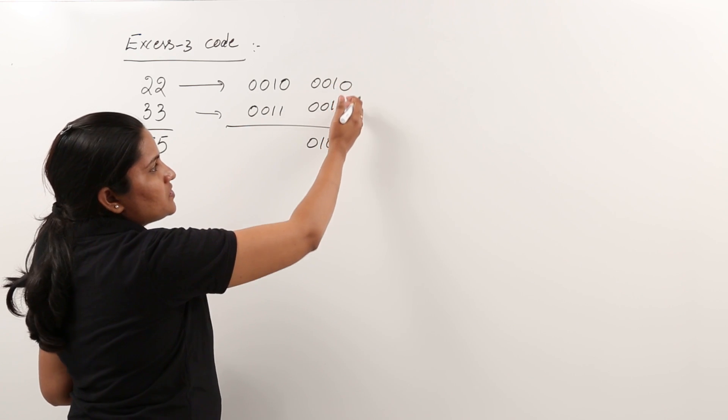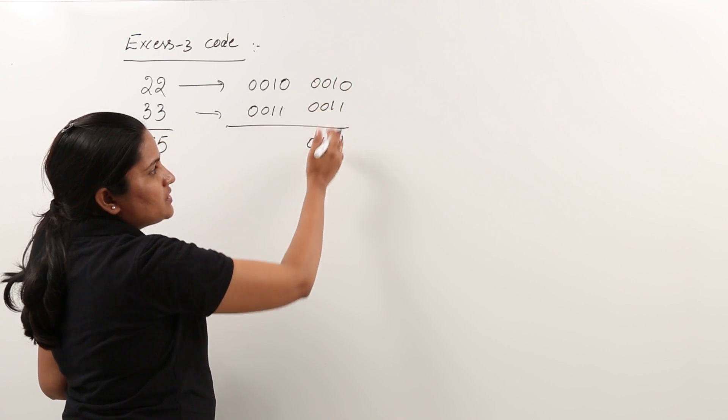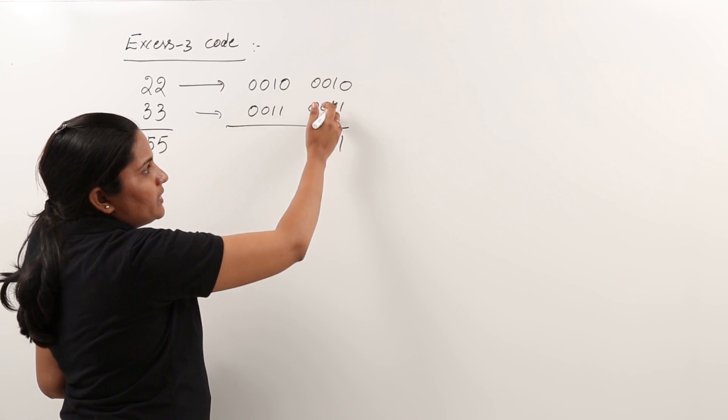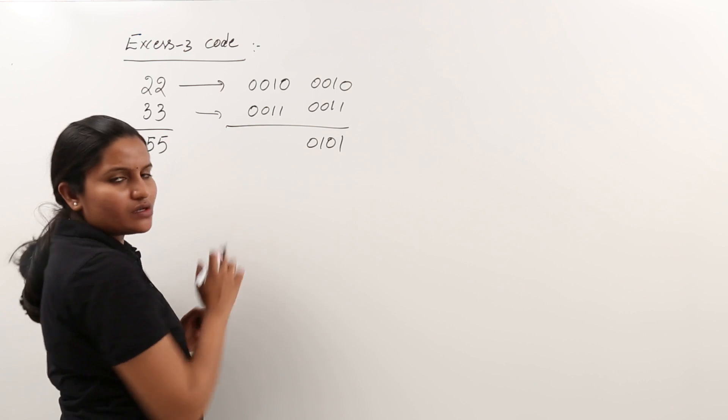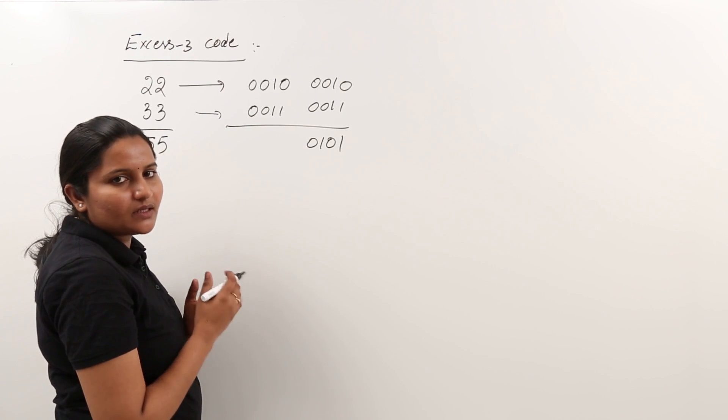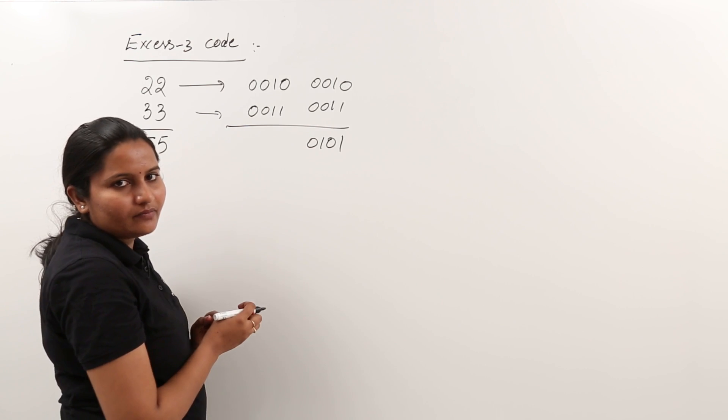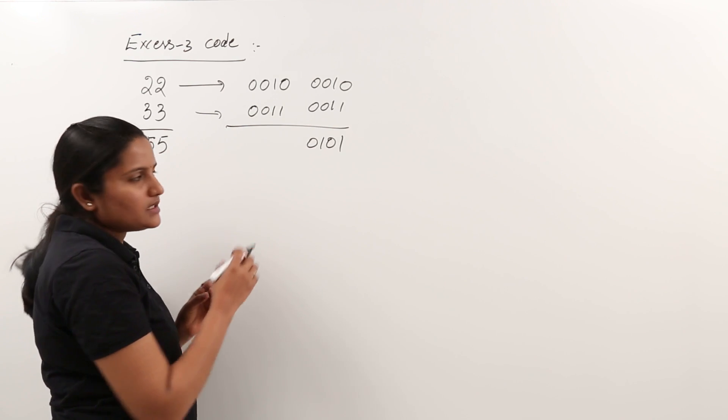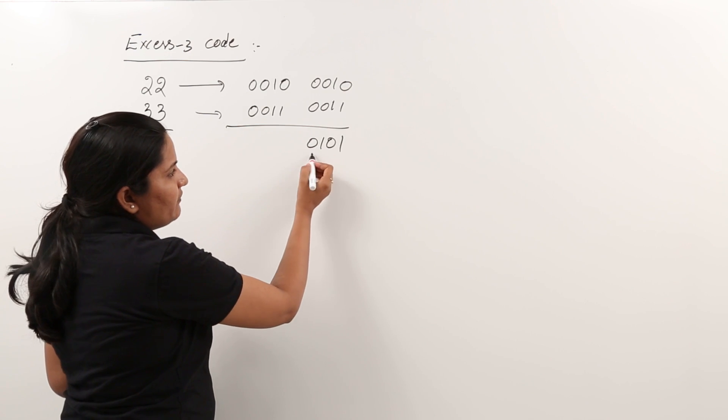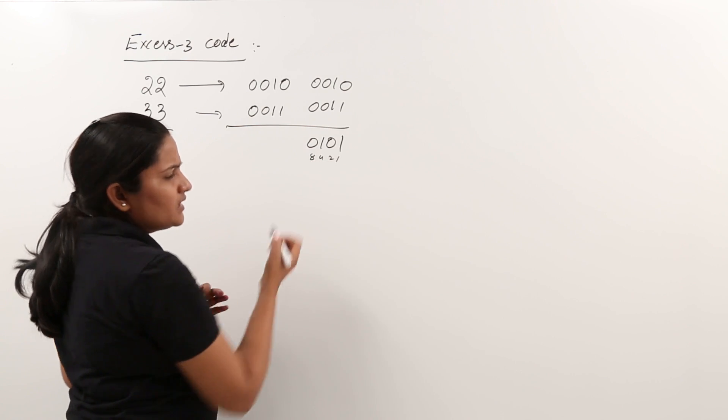So you can add like this also: 0 plus 1 is 1, 1 plus 1 is 0 with carry 1, 0 plus 0 and that carry you are getting 1, 0 plus 0 is 0. Like this also you can add to save some time. I am directly adding. So you also make this change, like you just simplify by using 8421. This is simple, right.